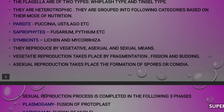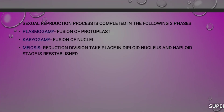The sexual process is completed in the following three phases. First, plasmogamy, which is the fusion of protoplasts. Second, karyogamy, which is the fusion of nuclei. Third, meiosis, which is reduction division, where diploid nuclei undergo reduction and the haploid stage is re-established.